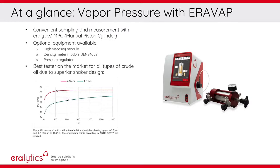AeroVap provides the most accurate results due to the superior shaker design and is therefore the best vapor pressure tester on the market for all types of crude oil. Its high shaking speed ensures complete pressure equilibrium within a reduced measuring time. In contrast, insufficient shaking causes biased results of up to 12 kPa.